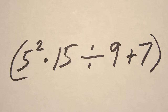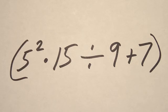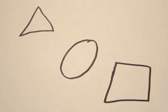For basic algebra, we're talking about order of operations, parentheses, and exponents, as well as those other operations and helping you solve equations. And basic geometry — not talking about the proofs necessarily, but we're talking about finding perimeter, area, and volume of various shapes.